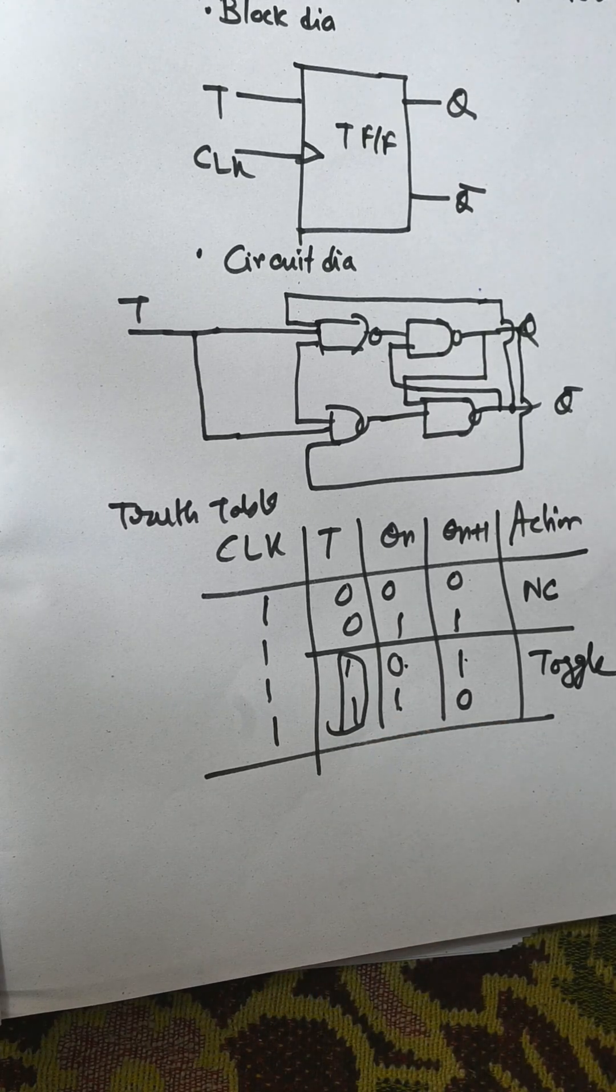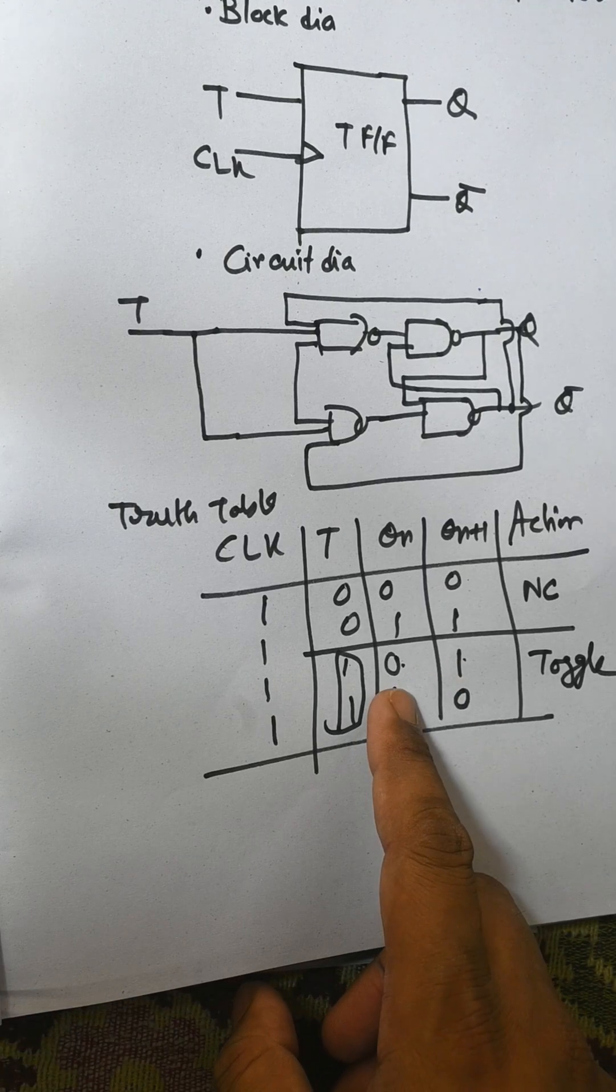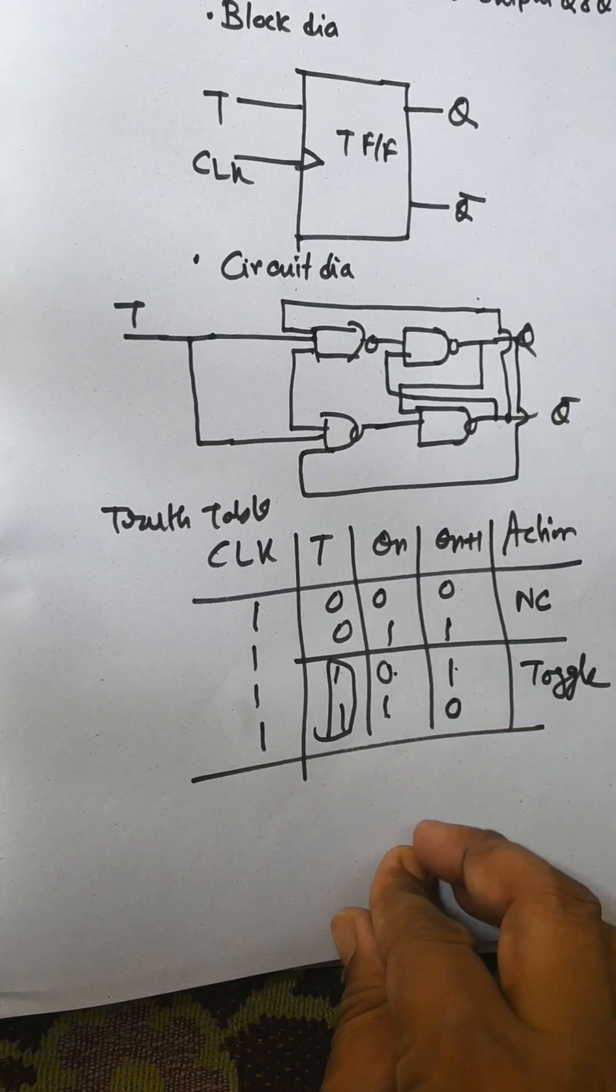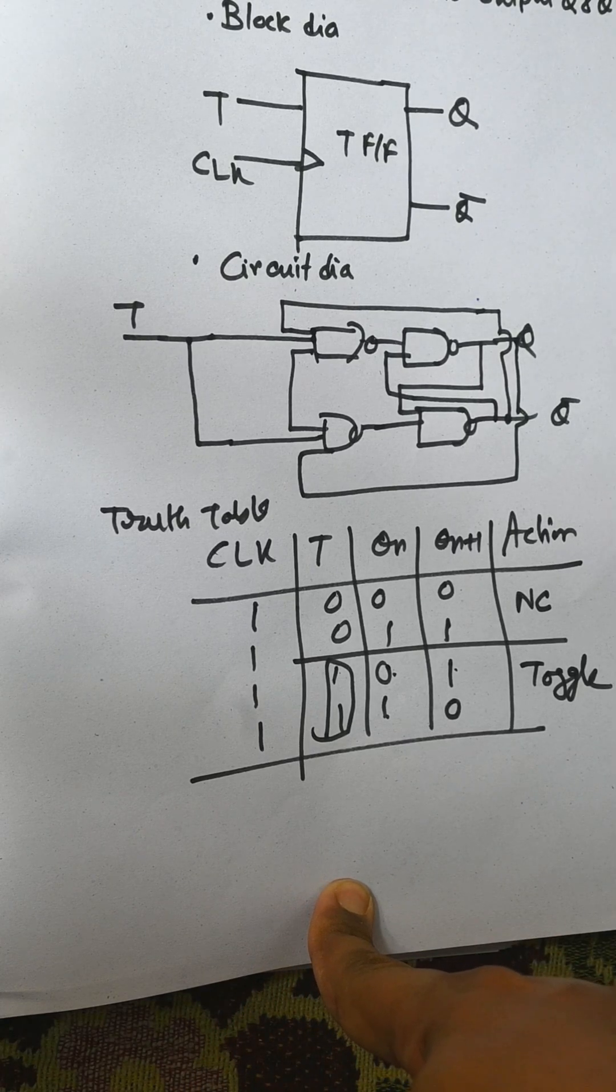For T equals 1, the T flip-flop toggles the output - the present state is converted, 0 to 1 and 1 to 0. So this is the concept of T flip-flop. Keep in touch with DJ Electronics. Thank you very much for watching this video. Please subscribe. Thank you.